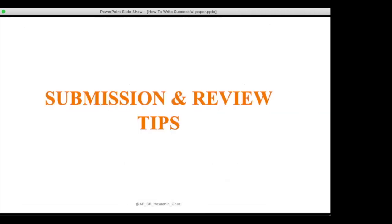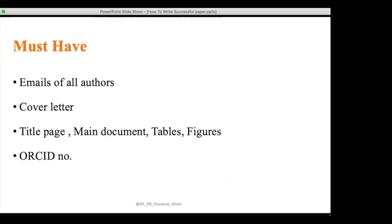For submission and review tips: before submitting, you need the email addresses of all co-authors, a cover letter, a title page, the main document, and tables and figures in separate files. Nowadays, every researcher must have an ORCID ID — many journals will ask for your ORCID number during the submission process.